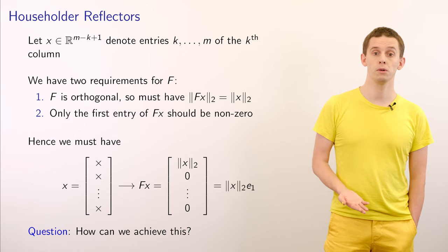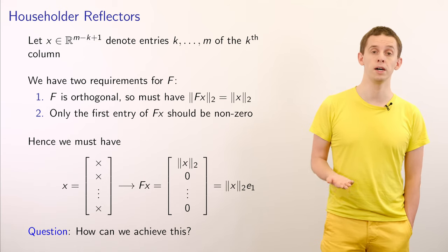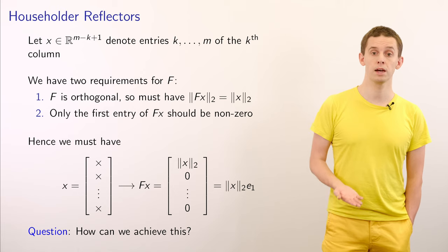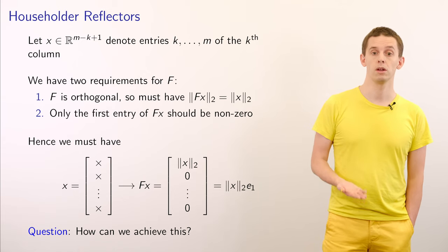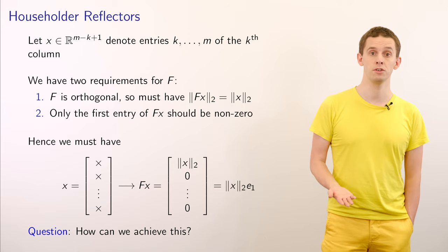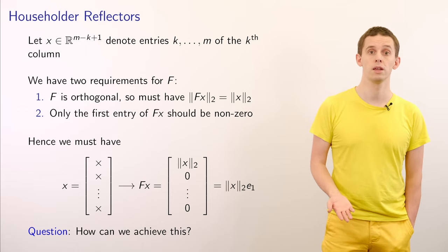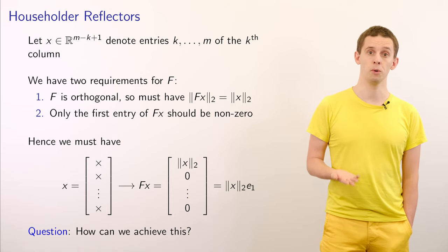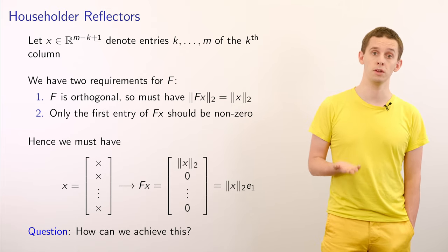What do we want our orthogonal matrix F to do? Let x be a vector that denotes the entries from k to m in the k-th column of our matrix. We have two requirements for F. First, F must be orthogonal, so the Euclidean norm of Fx must equal the Euclidean norm of x. Second, only the first entry of Fx should be non-zero. So Fx is a vector that is zero in entries 2 through the end, non-zero in its first entry, and has magnitude equal to the Euclidean norm of x.